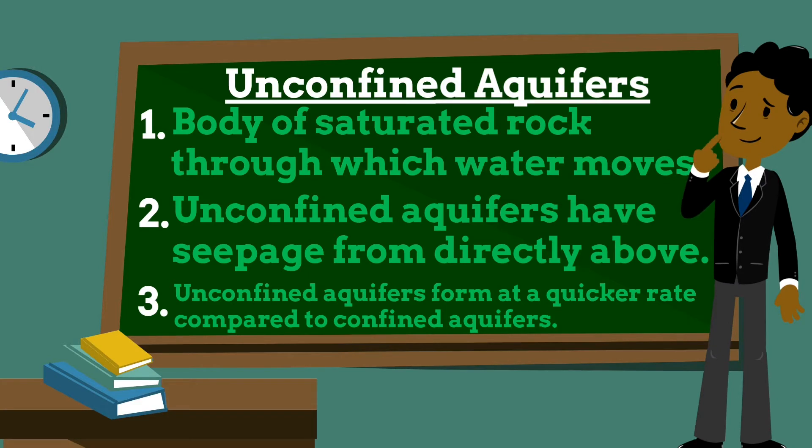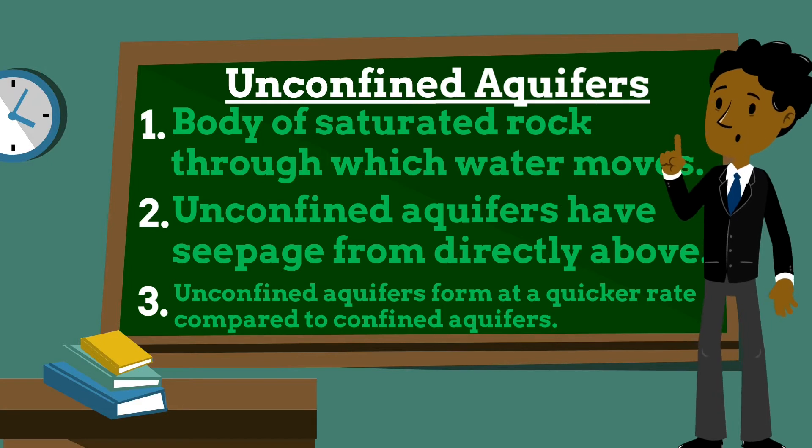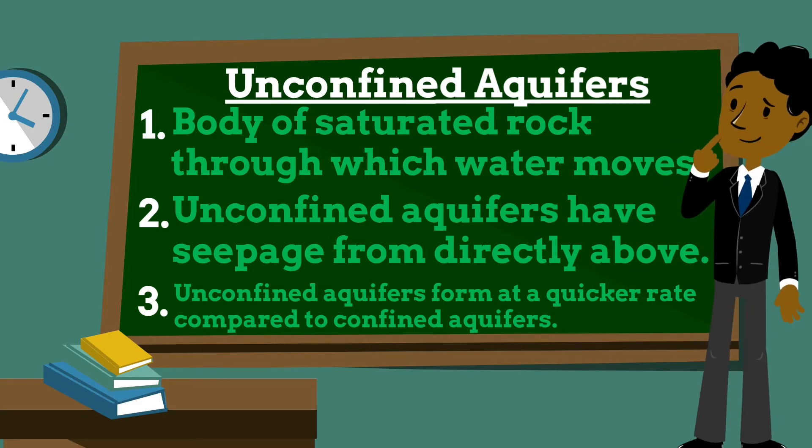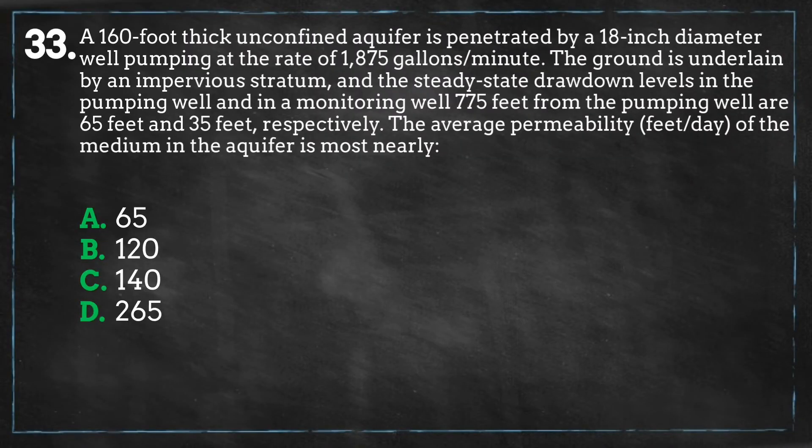Unconfined aquifers form at a quicker rate compared to confined aquifers. This is because they are in closer proximity to water sources from rain, streams or rivers. By contrast, confined aquifers are fed by underground tributaries.